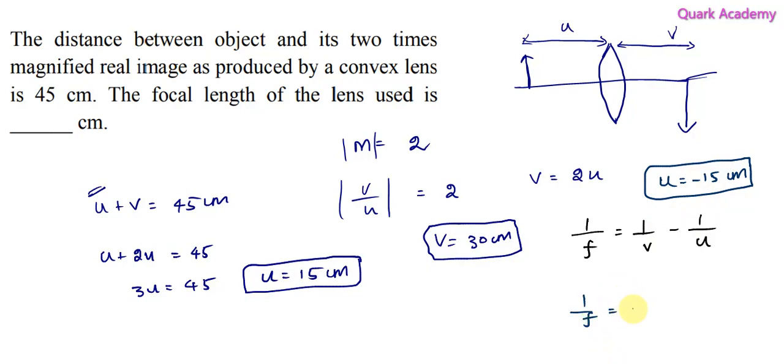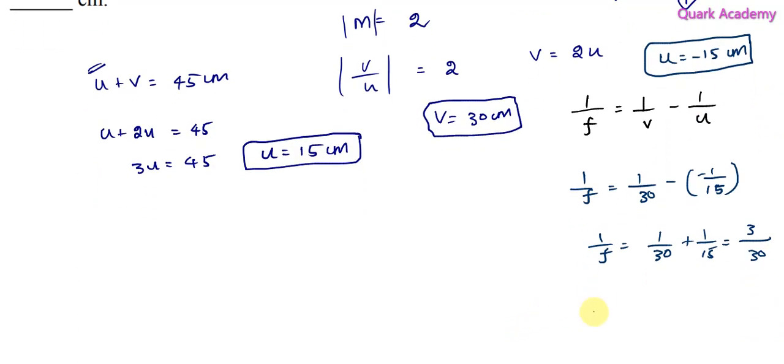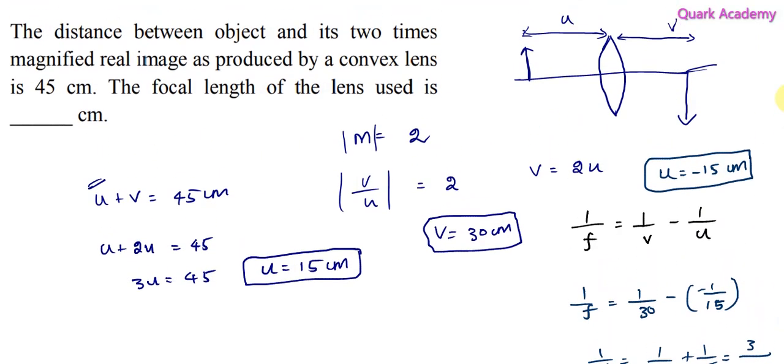So 1 by f will become 1 by 30 minus negative 1 by 15. So 1 by f will become 1 by 30 plus 1 by 15, and this will become 3 by 30, which is equal to 1 by 10. So 1 by f equals 1 by 10, so f equals 10 centimeters. So the focal length of the lens used is 10 centimeters.